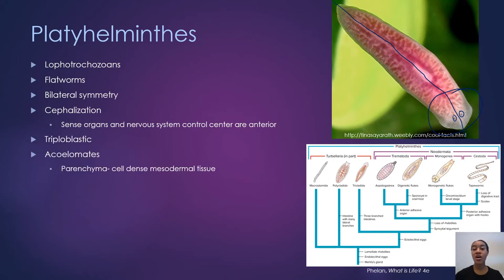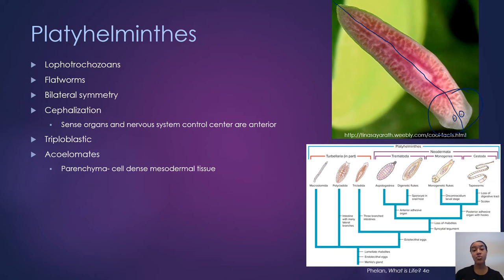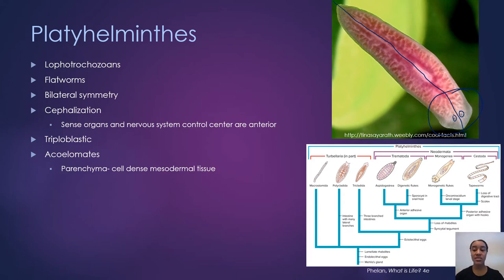Platyhelminthes are triploblastic — they're the first organisms we're studying this semester that have three germ layers. They are also acoelomates, meaning their coelom is completely filled with mesoderm tissue. The tissue that fills the center is called the parenchyma, which is essentially very cell-dense mesodermal tissue. We'll take a look at some of that in the next slide.